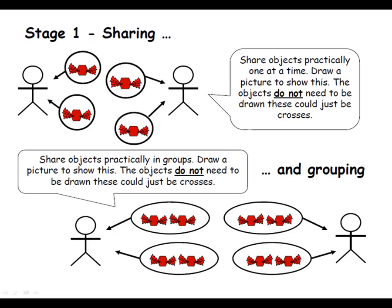We would initially start division looking at sharing between, and that's the way I encourage my children to look at the symbol of the dividing sign — it's six shared between three. We would practically look at using objects, multi-link, cubes, however it may be, to share the objects out so we can work out how much each person would have, making sure that each set would be equal. We wouldn't look at remainders; they would always have exact numbers.